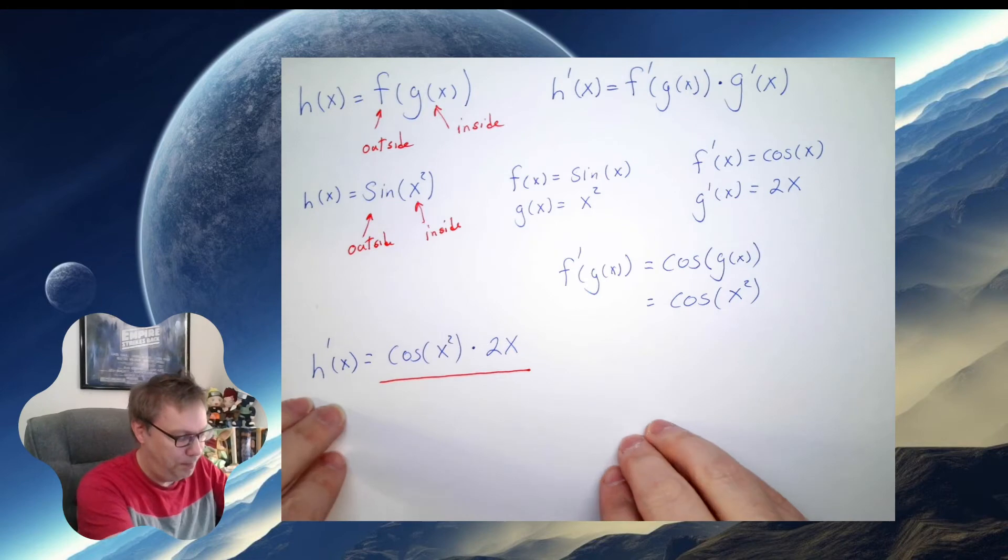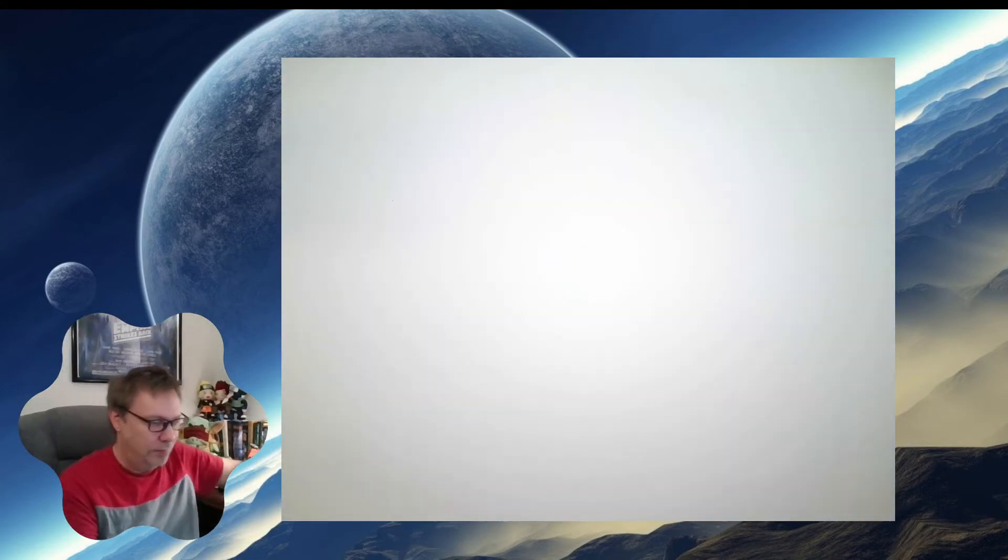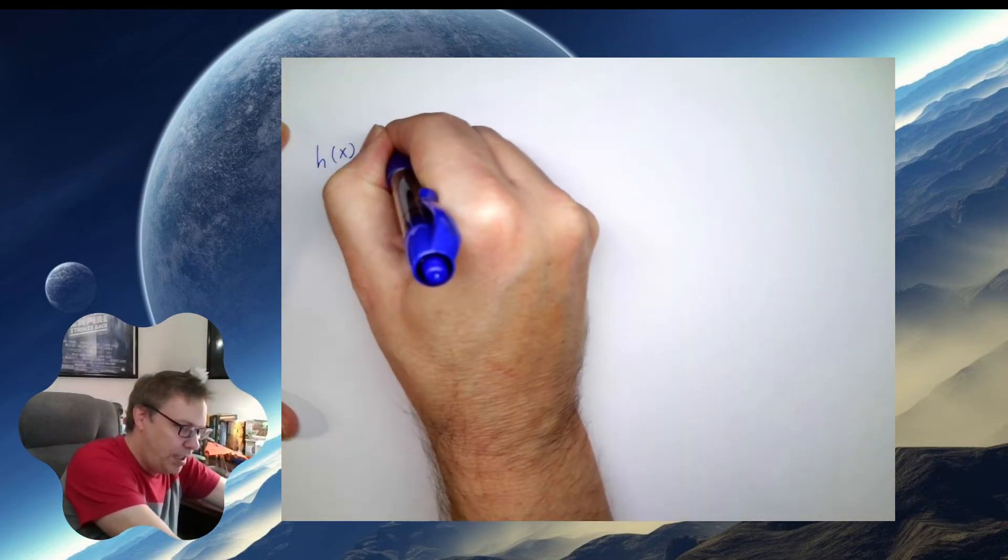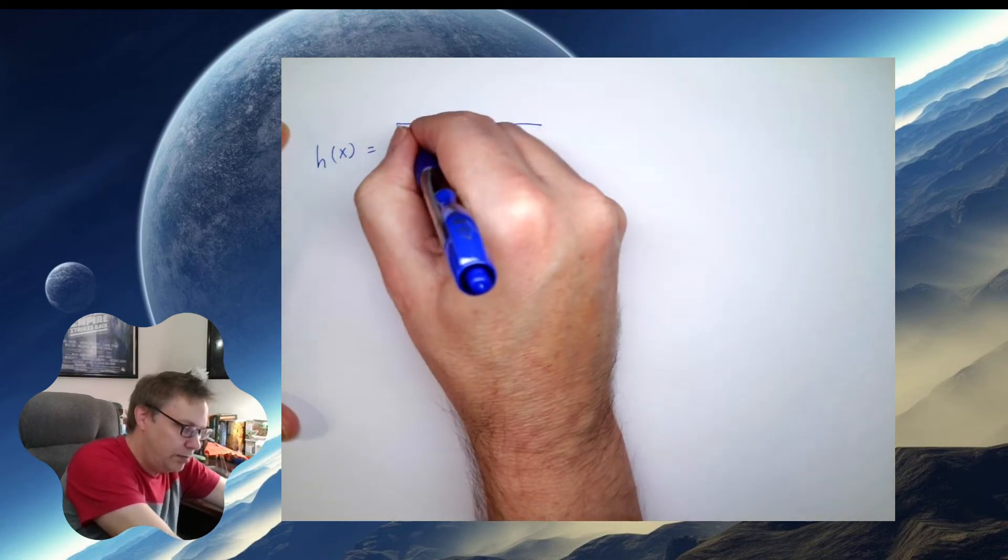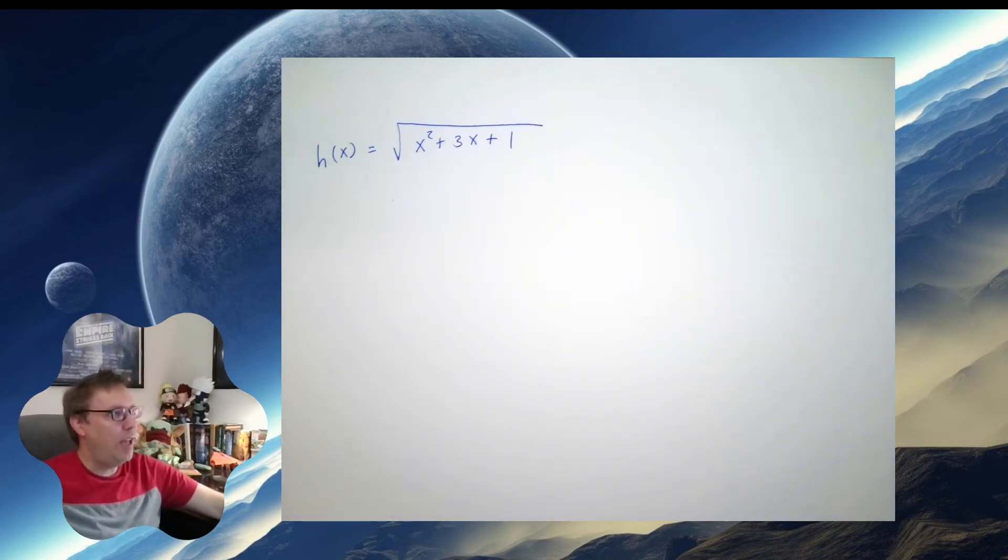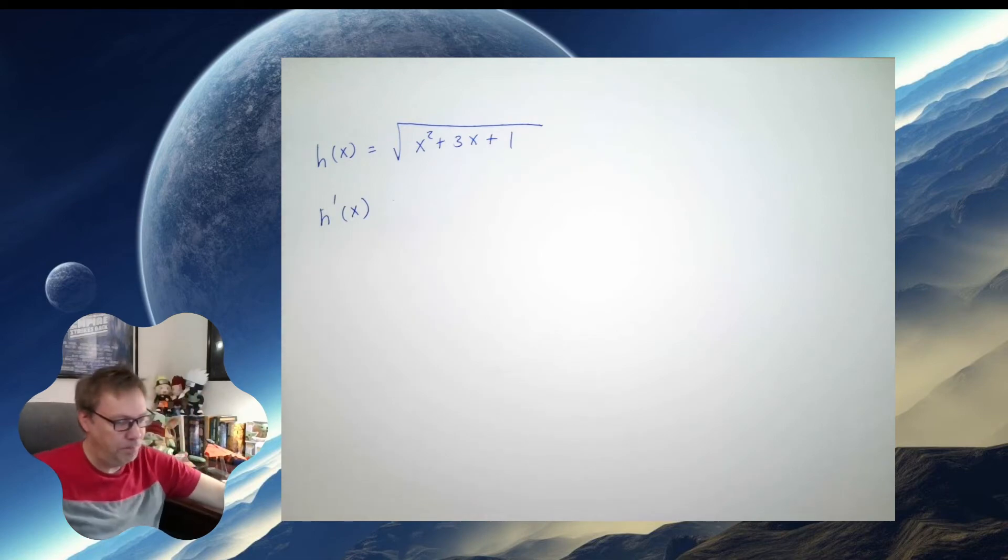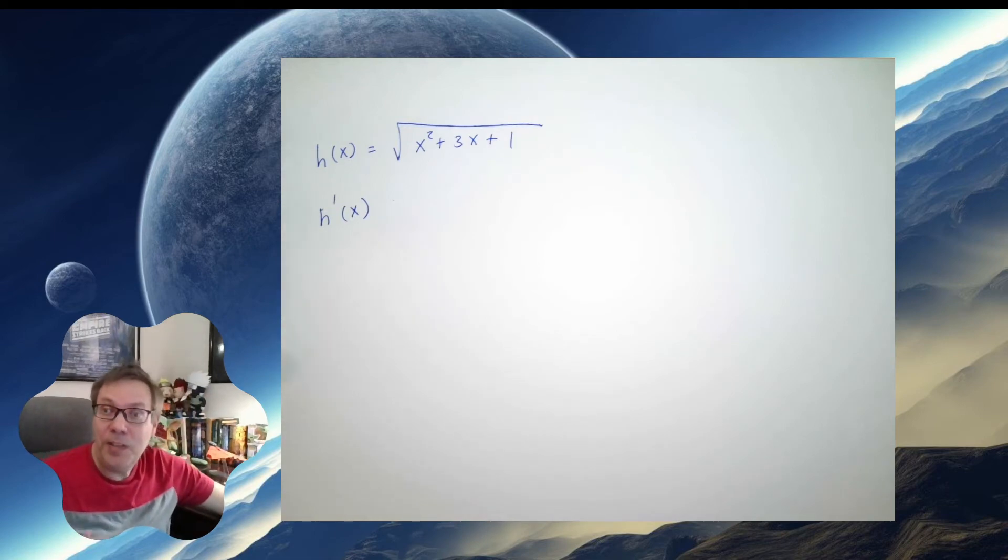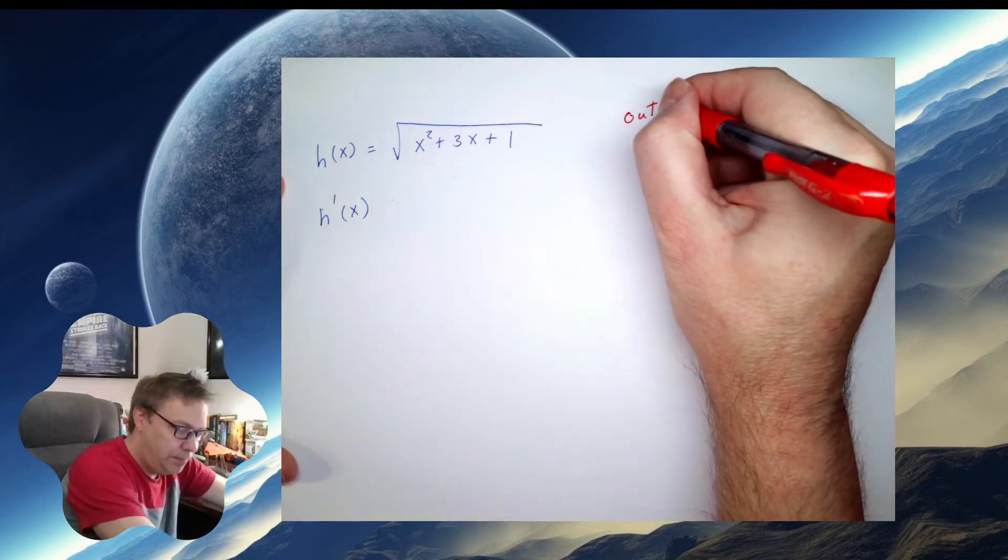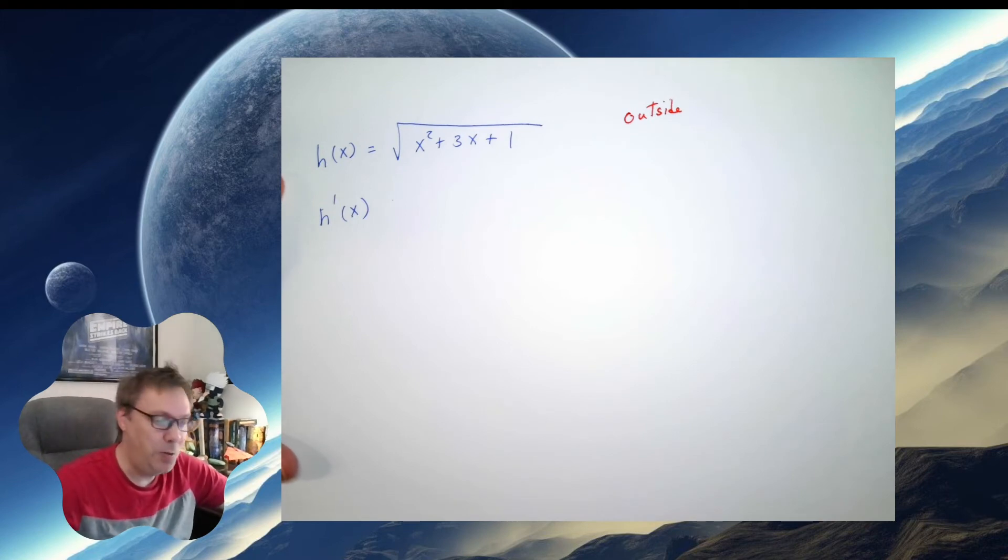Let's try another one. So suppose I have a function that looks like this. And I want to find the derivative of it. So the first thing I need to do is figure out what the outside is. So what does the outside look like here? And with a little bit of practice, you're going to be able to see this very quickly.